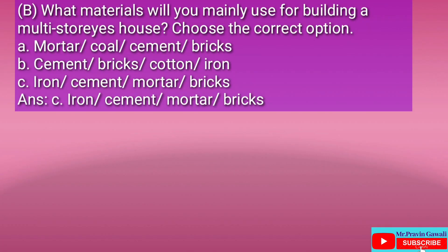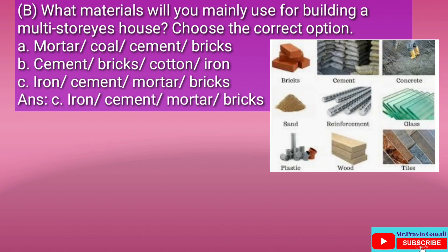Question 1b: What materials will you mainly use for building a multi-storied house? Choose the correct option. A: motor, coal, cement, bricks. B: cement, bricks, cotton, iron. C: iron, cement, mortar, bricks. The correct answer is C — iron, cement, mortar, bricks.